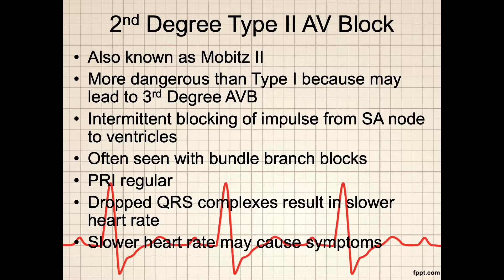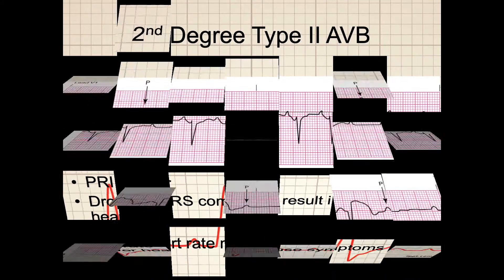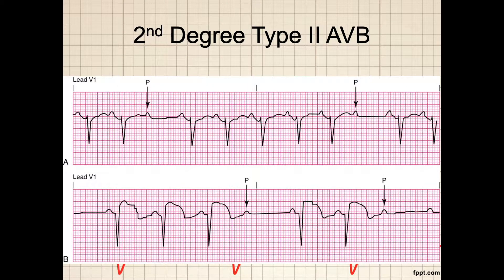Second degree type 2 AV blocks, also known as Mobitz II, are more dangerous than type 1 because they can lead to the very dangerous third degree AV block. In a second degree type 2 AV block, there is intermittent blocking of the impulse from the SA node to the ventricles, and it is often seen in conjunction with bundle branch blocks. The PRI is always regular — always the same. However, the QRS complex drops suddenly and unexpectedly, resulting in a slower overall heart rate. In this example, notice that the PR interval remains the same, but a QRS complex simply drops off. Notice especially in the lower strip how slow the ventricular response time is — this could lead to symptomatic bradycardia.